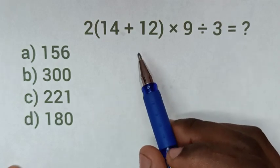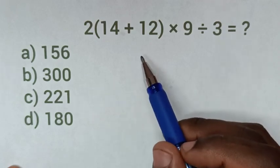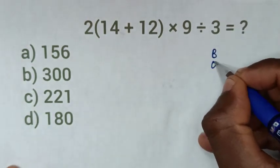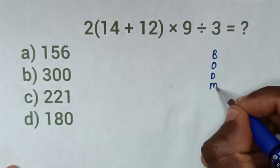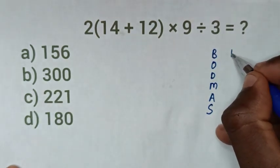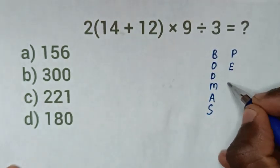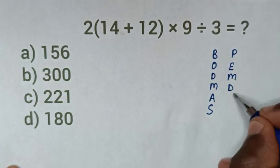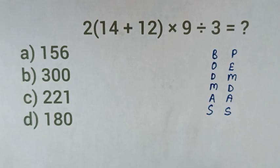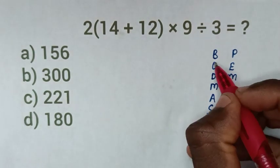We will do it by using BODMAS or PEMDAS rule. From BODMAS or PEMDAS, the first step is we check if there is B or P.